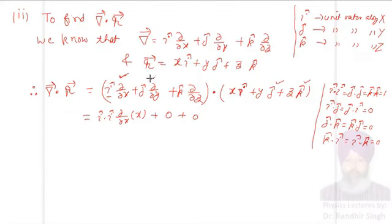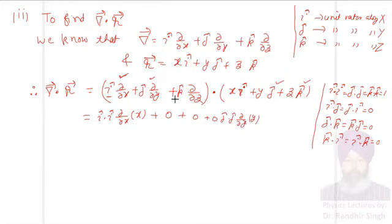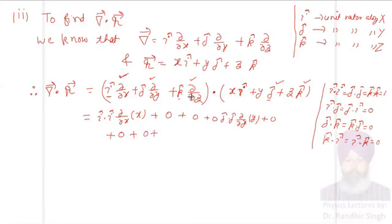Continuing: when I multiply the j-cap term, j-cap·i-cap will be zero; j-cap·j-cap gives ∂y/∂y; and j-cap·k-cap will be zero. Similarly, multiplying the k-cap term: k-cap·i-cap is zero, k-cap·j-cap is zero, and k-cap·k-cap gives ∂z/∂z.